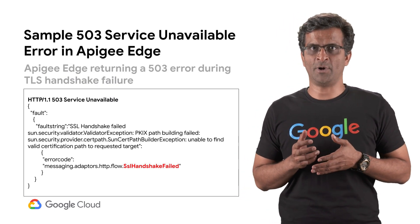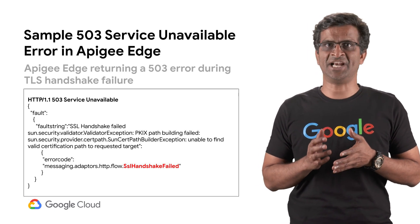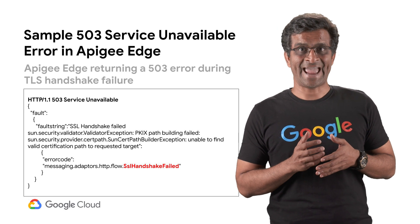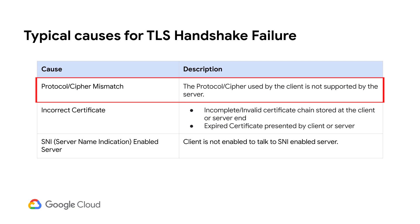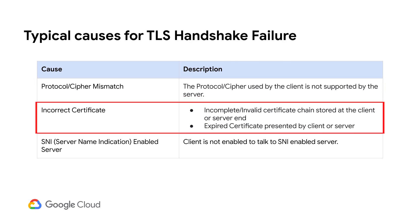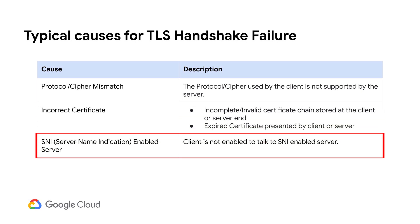Here is a sample 503 service unavailable error that occurs when APG Edge encounters a TLS handshake failure. Notice that the error or fault code is set as SSL handshake failed. The typical causes of TLS handshake failures in APG Edge include: an unsupported protocol or cipher sent by the APG Edge message processor; an incomplete or invalid certificate chain in the trust store or key store; an expired certificate presented by either the message processor or backend service; or the message processor not being enabled to communicate with an SNI-enabled backend service.